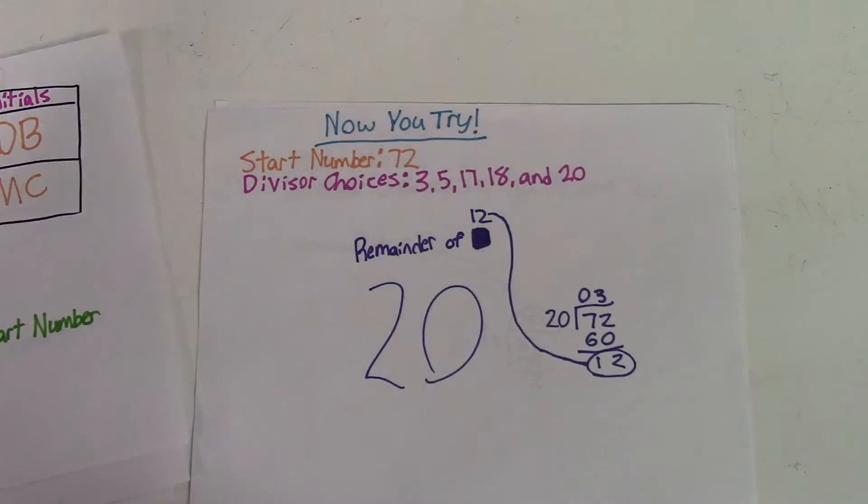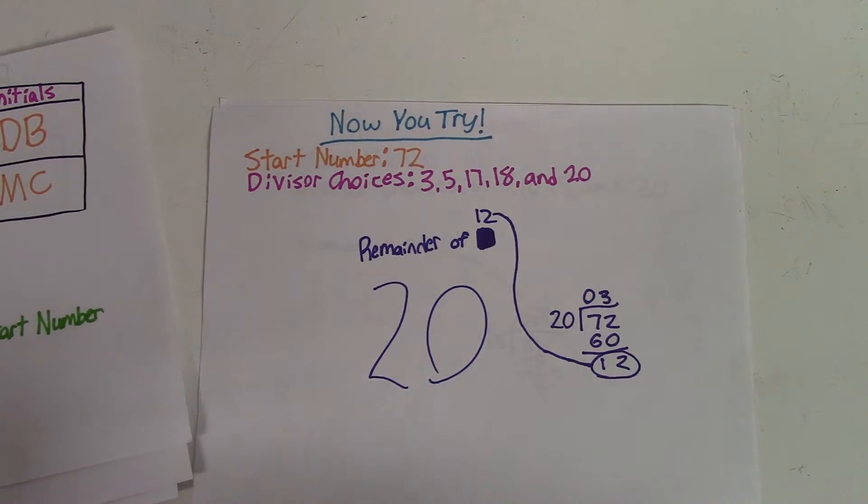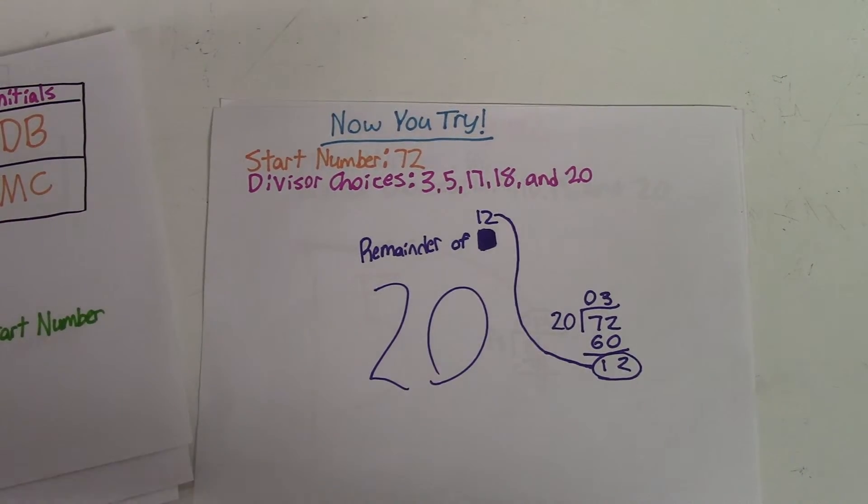The answer was 20, because if you did 72 divided by 20, you would go 20 times 3 is 60, and there would be a remainder of 12. And if you tried all of the other ones, there would be a remainder less than 12.